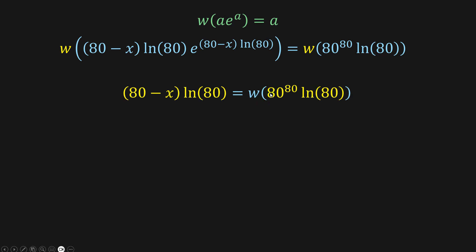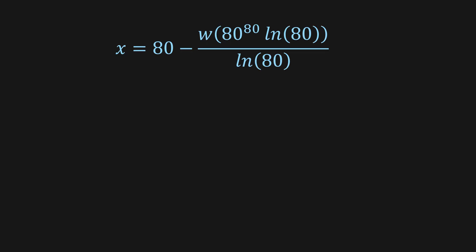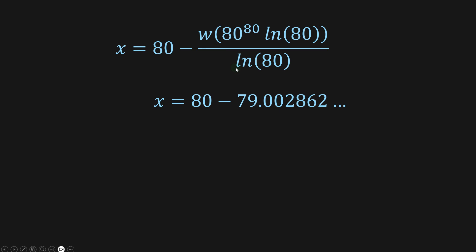We apply the Lambert W function and keep it for this expression. Then, sending ln(80) to divide on the other side and making some organization, we get this expression. We have to plug this into Wolfram Alpha — I forgot to include the screenshot — but that gives a value of approximately 79-point-something.